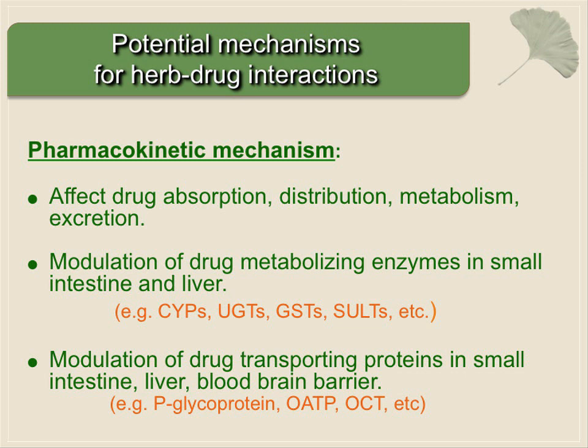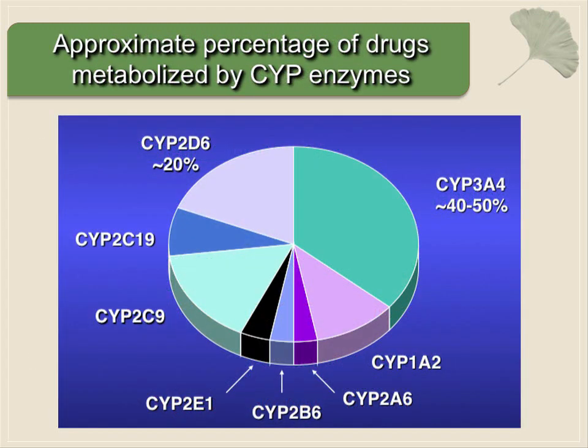By affecting the metabolism or transport, you can certainly affect the pharmacokinetics of a conventional medication. For those not familiar with cytochrome P450s, only a handful are really important for human drug metabolism. The most important is CYP3A4, because about half of all conventional medications are metabolized to some extent by 3A4. The next most important is 2D6, followed by 2C9, and then a litany of others.